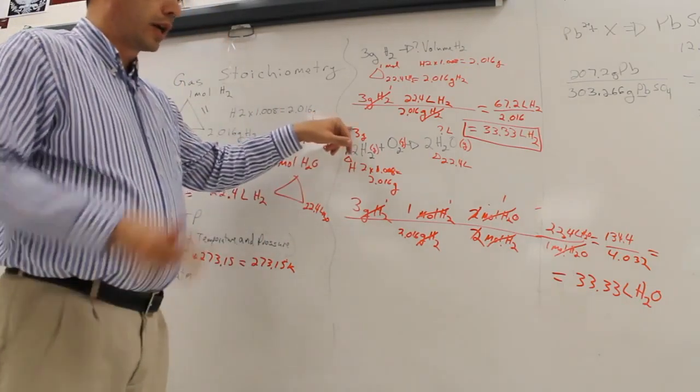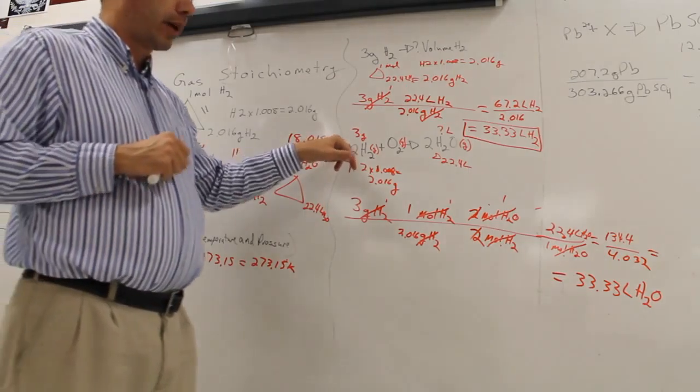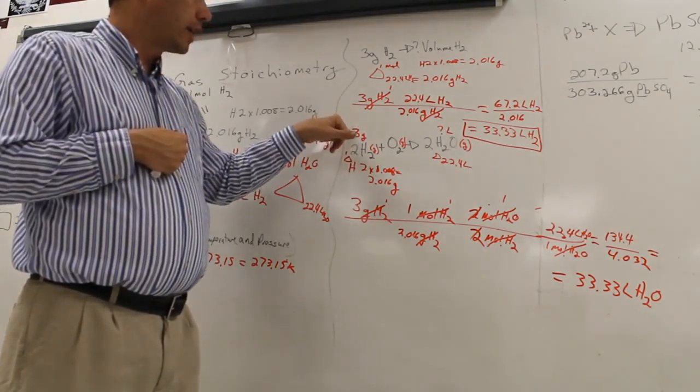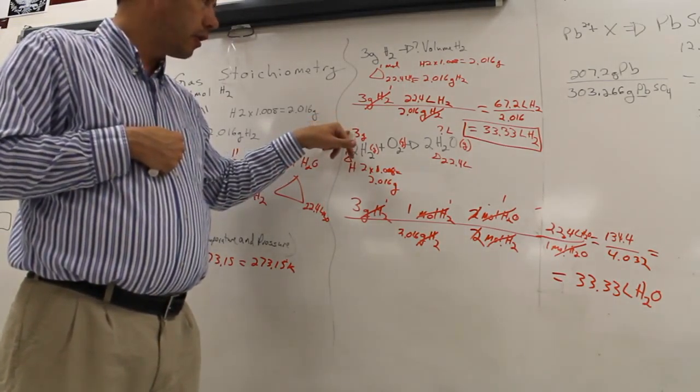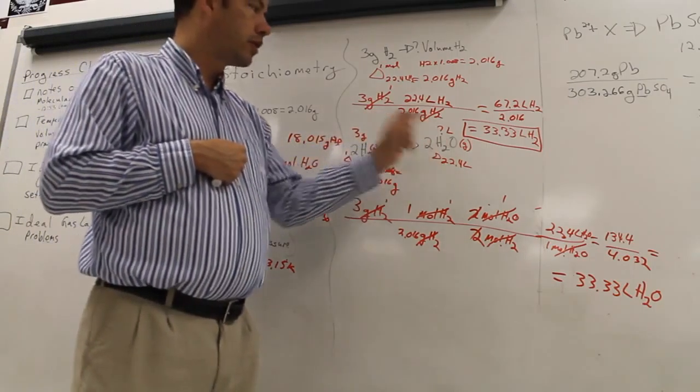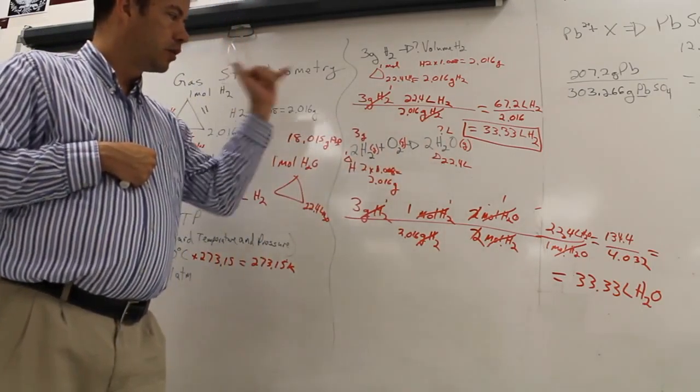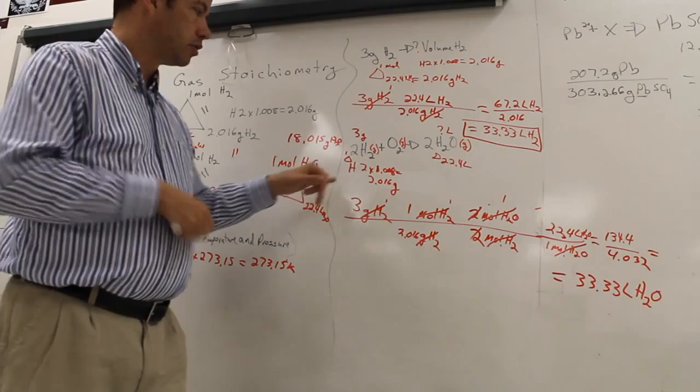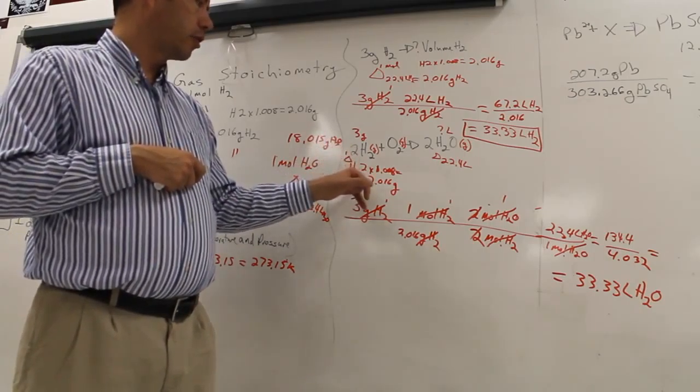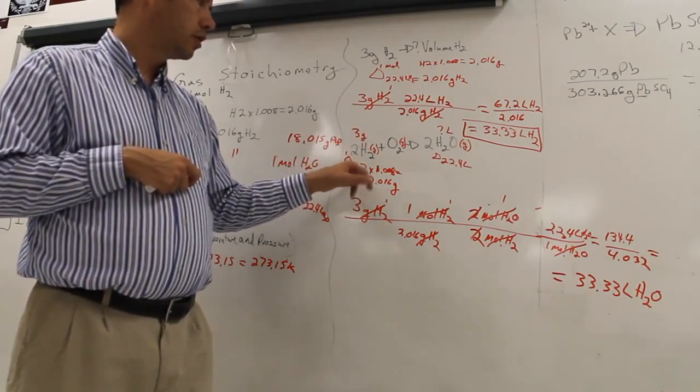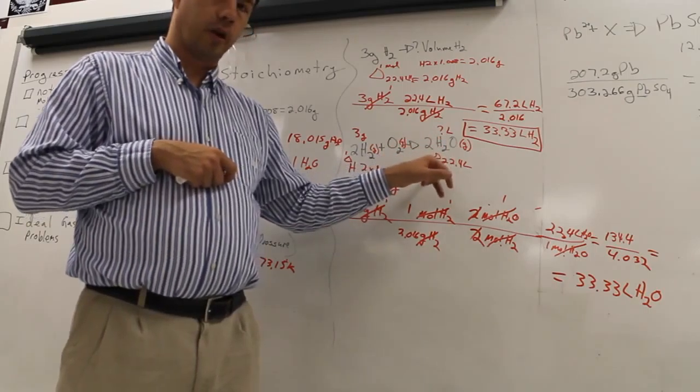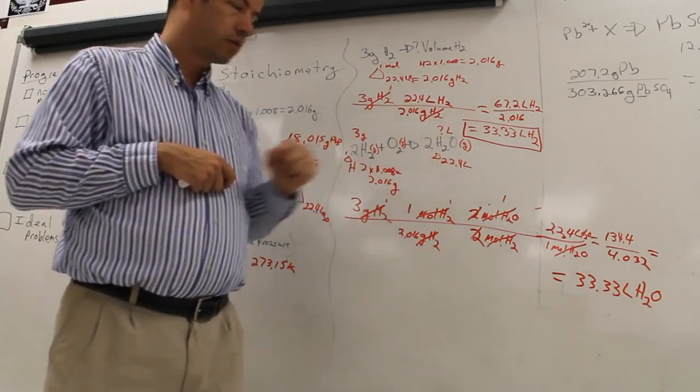First step is, whenever you have a problem, is make sure you have a balanced equation. Write the given numbers on top of the equation. So, 3 grams, question mark, liters. Then you're going to do your triangles. So, we're going to either find the molar mass, which is in grams, or we're going to find the volume, which is always 22.4 liters.